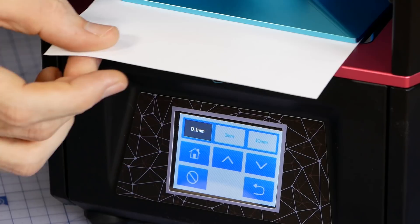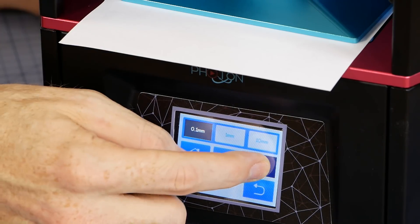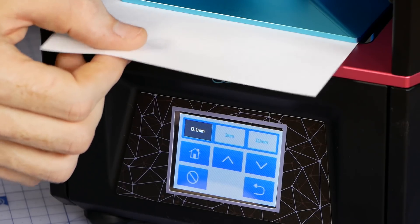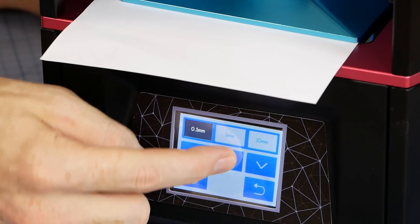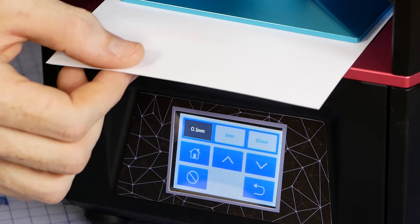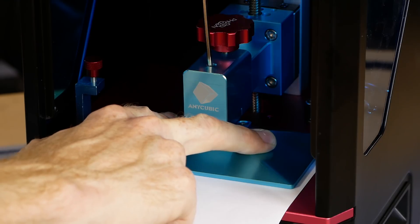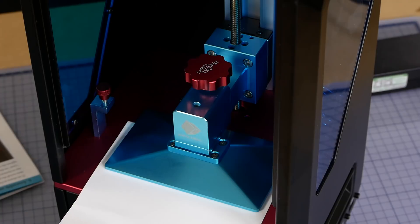The build plate is then lowered incrementally until the paper starts to feel drag against the LCD screen and the build plate. Once you reach that spot where the paper is just starting to become squashed between the two surfaces we can square up the build plate and tighten the screw to fix everything securely in position.